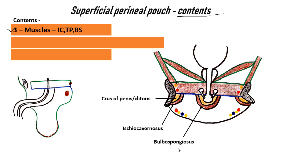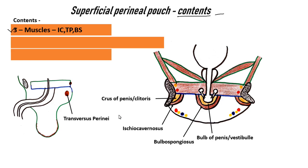The other muscle is the bulbospongiosus. It will cover the bulb of the penis or the vestibule. The last muscle is the transversus perinei muscle, which lies in the posterior part of the superficial perineal pouch.